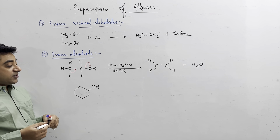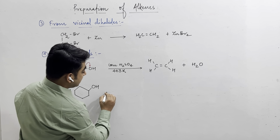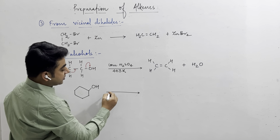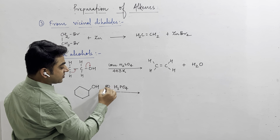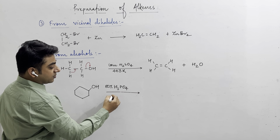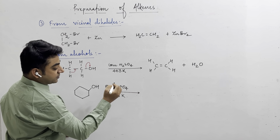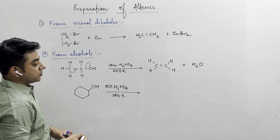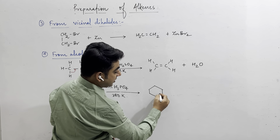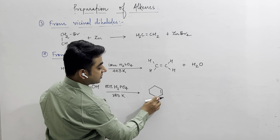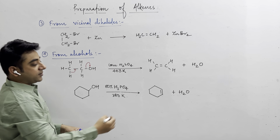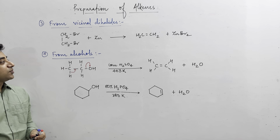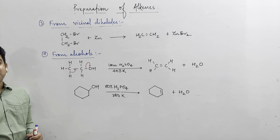For example, cyclohexanol is a secondary alcohol. When treated with approximately 80% phosphoric acid at around 380 K, elimination takes place giving cyclohexene as the product with H₂O eliminated as the byproduct. That covers the preparation of alkenes.